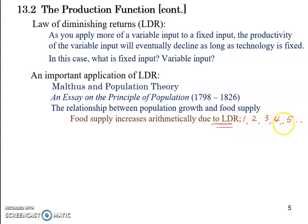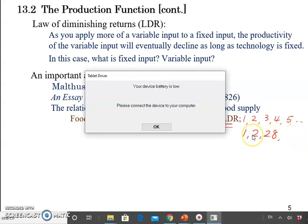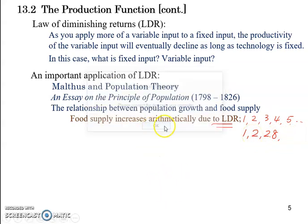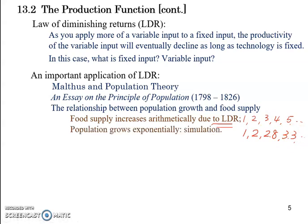So instead of going from one to two, two to three, three to four, we would expect growth like one to two, then two to two-point-five, then two-point-eight — so only point-eight growth compared to the one unit growth at the beginning. The next step might be only half a unit of growth, reaching about three-point-three. It will grow, but more and more slowly, while population grows exponentially.